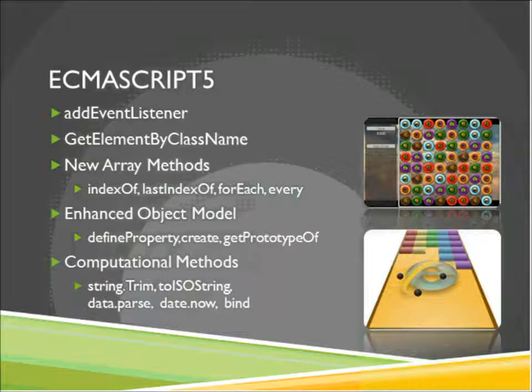ECMAScript 5 — the newer version of JavaScript, as defined by the standards body — gives us the ability to add event listeners, get elements by class name, and work with objects in new ways. While JavaScript is not a traditionally object-oriented language, we have some new methods to build our own objects — instead of using prototypes we can define actual properties and use Object.getPrototypeOf. We also have methods familiar from object-oriented languages, like trimming a string.